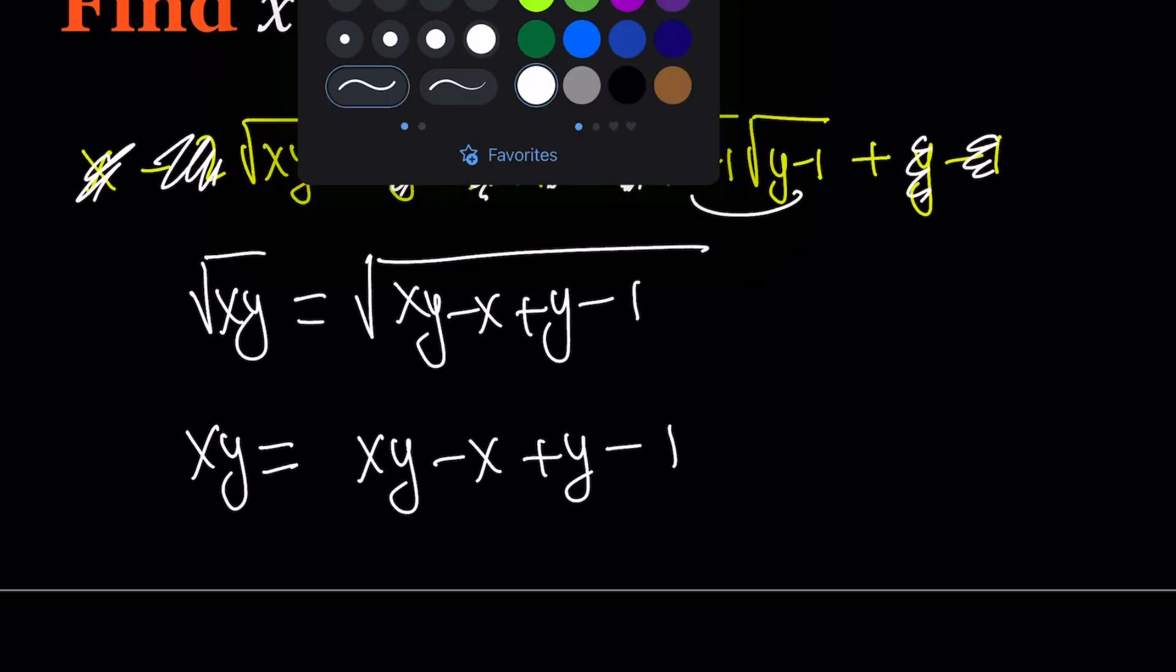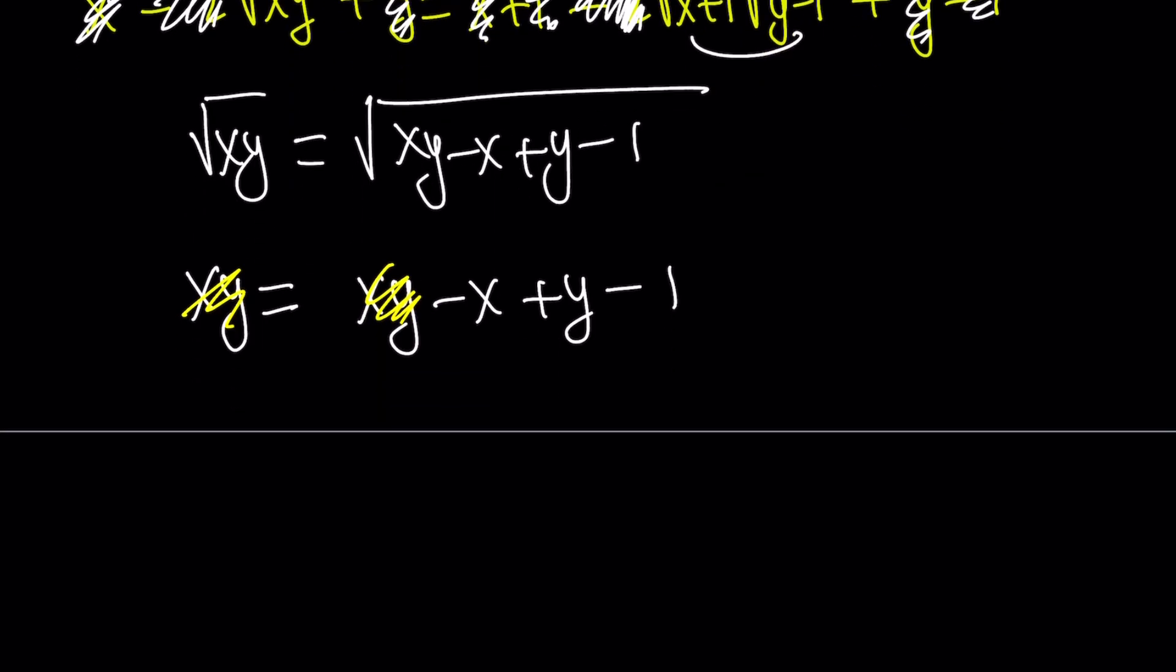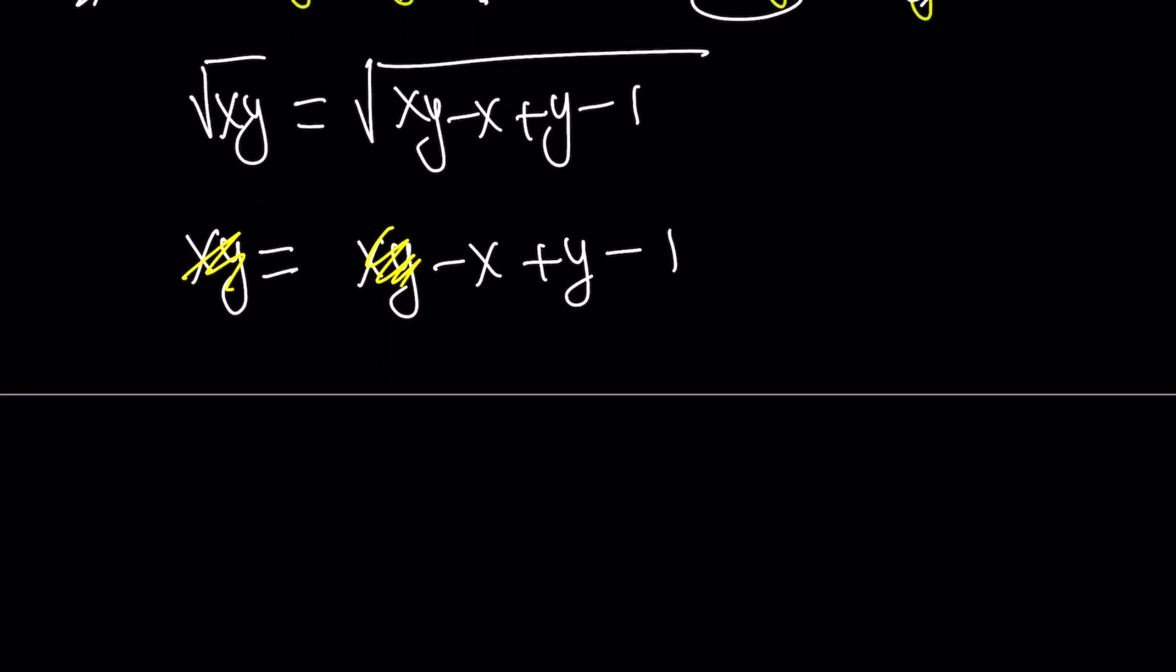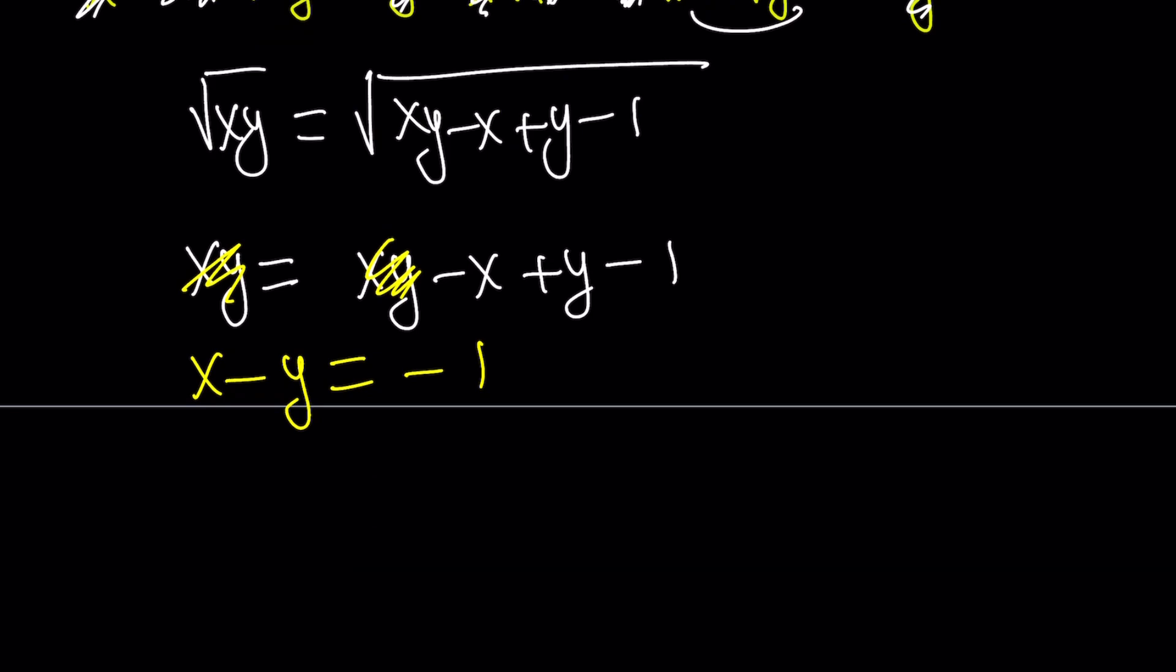More cancellations, right? xy cancels out, leaving us with something super-duper simple. And guess what? If we put the negative x plus y on the left-hand side and write it as x minus y, and negative 1 stays on the right-hand side, and guess what we were looking for? We were looking for x minus y. Wow. Are you serious? Is it that easy? Well, maybe, maybe not. But we got x minus y equals negative 1 from here.